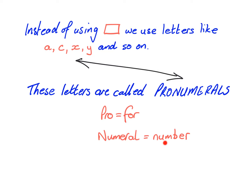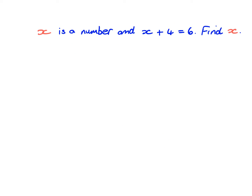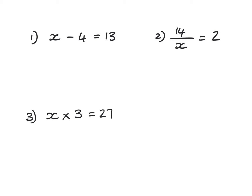Here's a worked example: x is a number and x plus four is equal to six. We need to find what x is. In the past this would have been a box — something plus four equals six. We know that two plus four equals six, therefore x is equal to two.